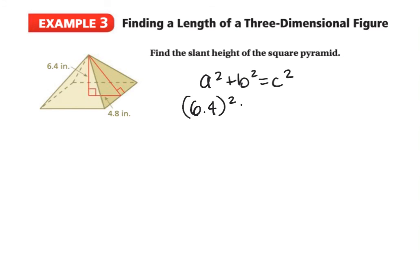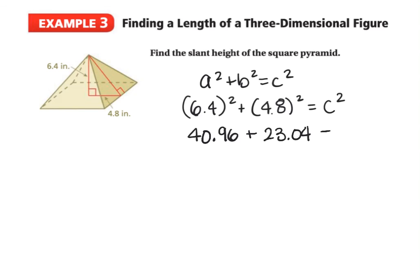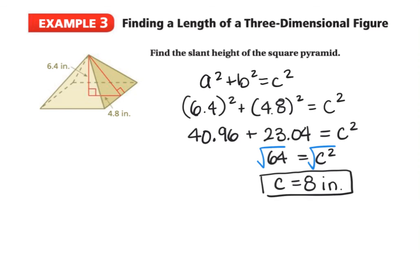We're looking for the slant height, which is the hypotenuse. So: 6.4 squared plus 4.8 squared is equal to C squared. Using parentheses to make sure the whole value is squared — 6.4 squared is 40.96 and 4.8 squared is 23.04, and their sum is 64, equal to C squared. Taking the square root of both sides, the square root of 64 is 8, so C equals 8 inches. We can double-check because 8 is larger than both 6.4 and 4.8, confirming the hypotenuse is the longest side.